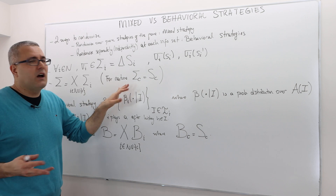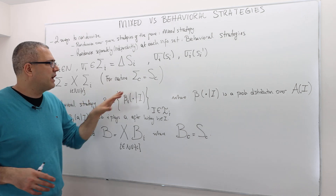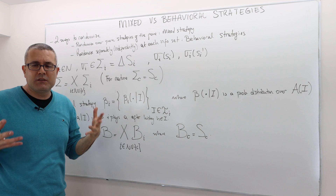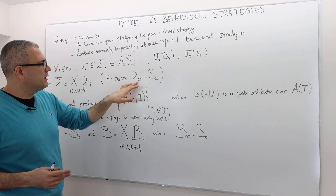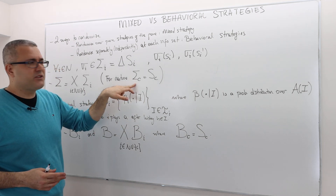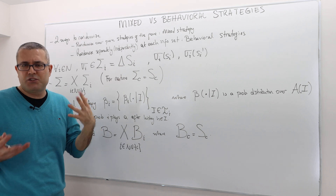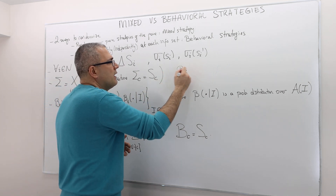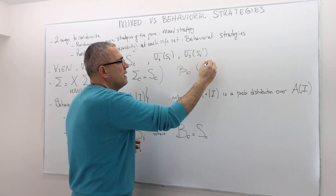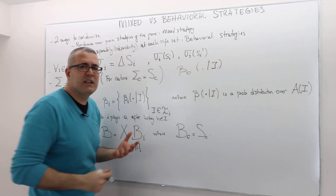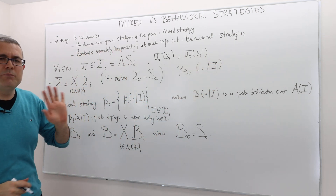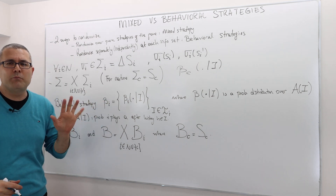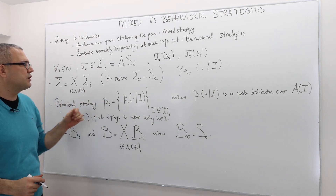Nature is not a player, so we do not mix over his strategies. Therefore, nature's mixed strategy space is nothing but his strategy space — remember the beta C function following the information set. We basically do not touch nature and we don't make any randomization for nature.